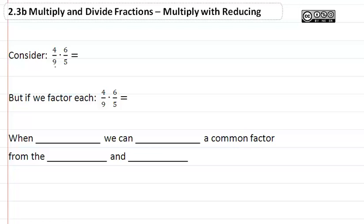Consider 4/9 times 6/5. This would give us 24/45, and then we have a common factor of 3 that we would divide out, and we would get that this equals 8/15.